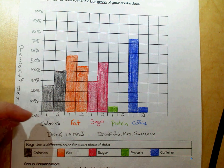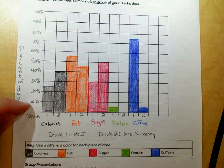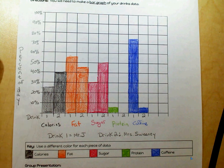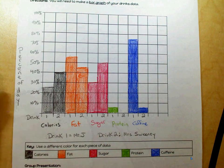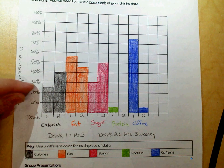Now, you need to label your y-axis the percent of the day. Bottom is your drinks and their categories, and then it goes up by 10% each time.